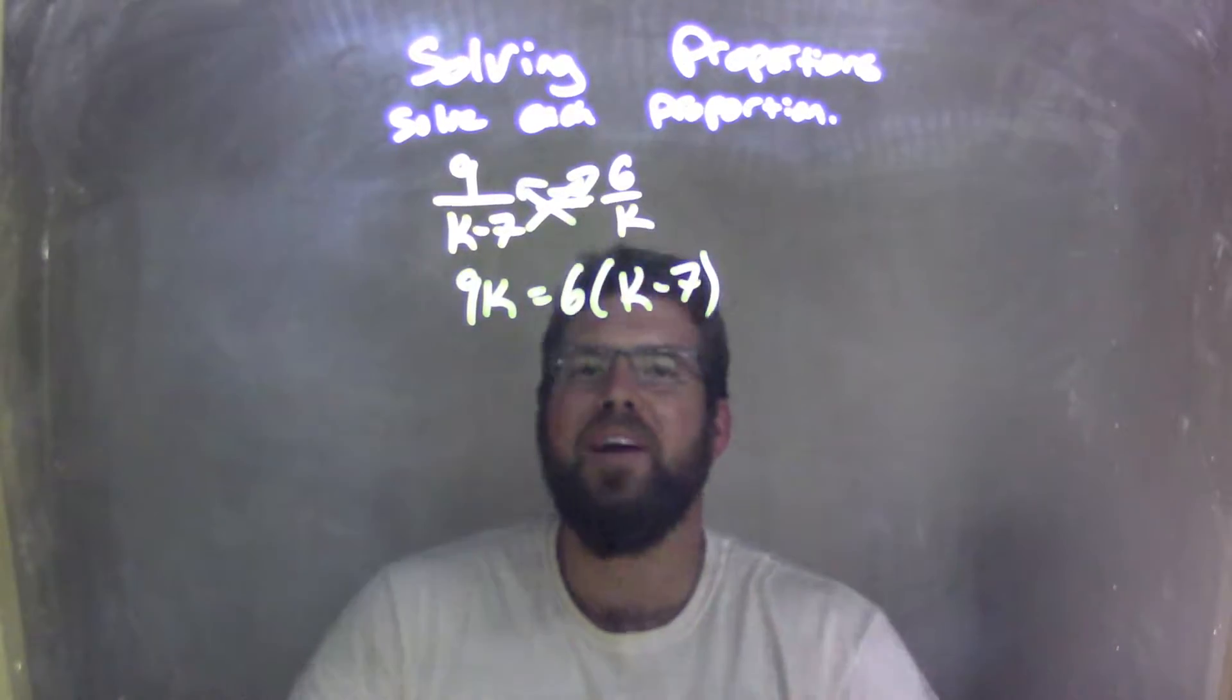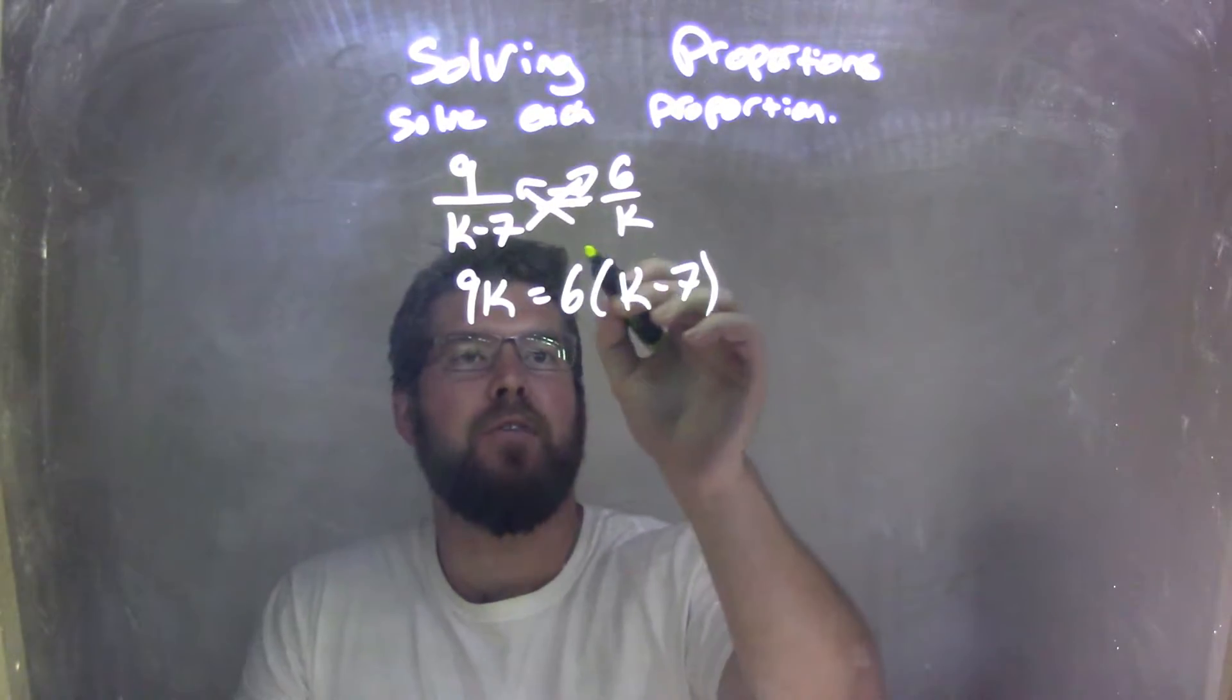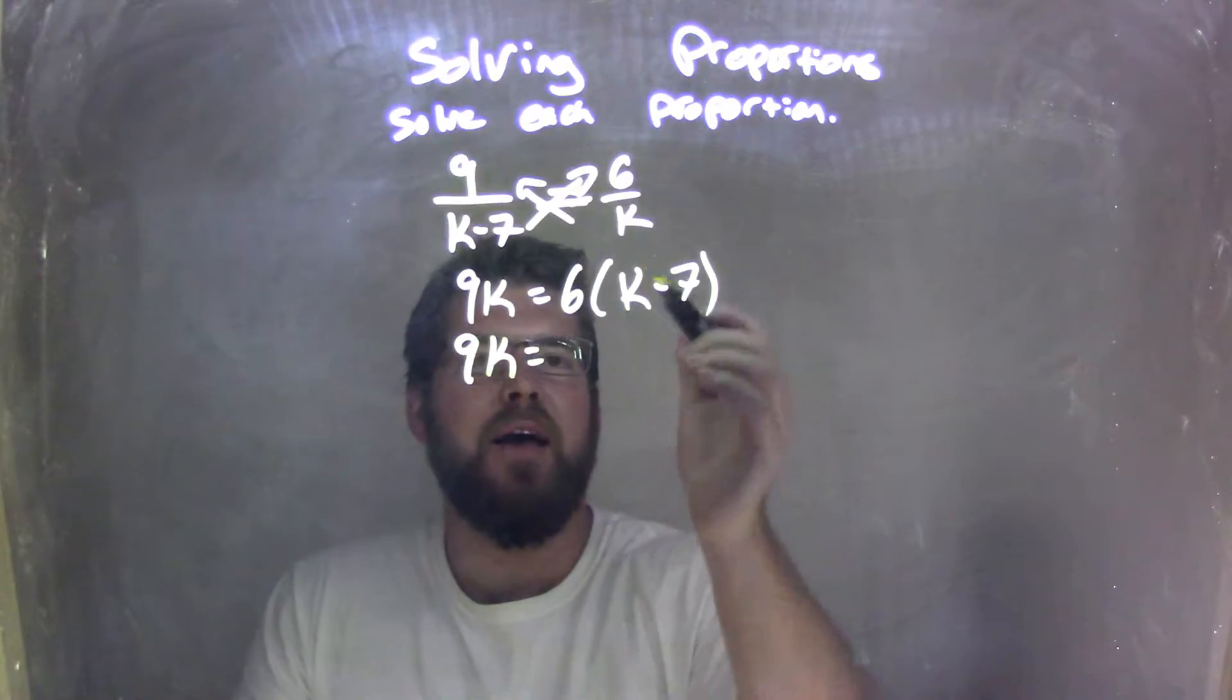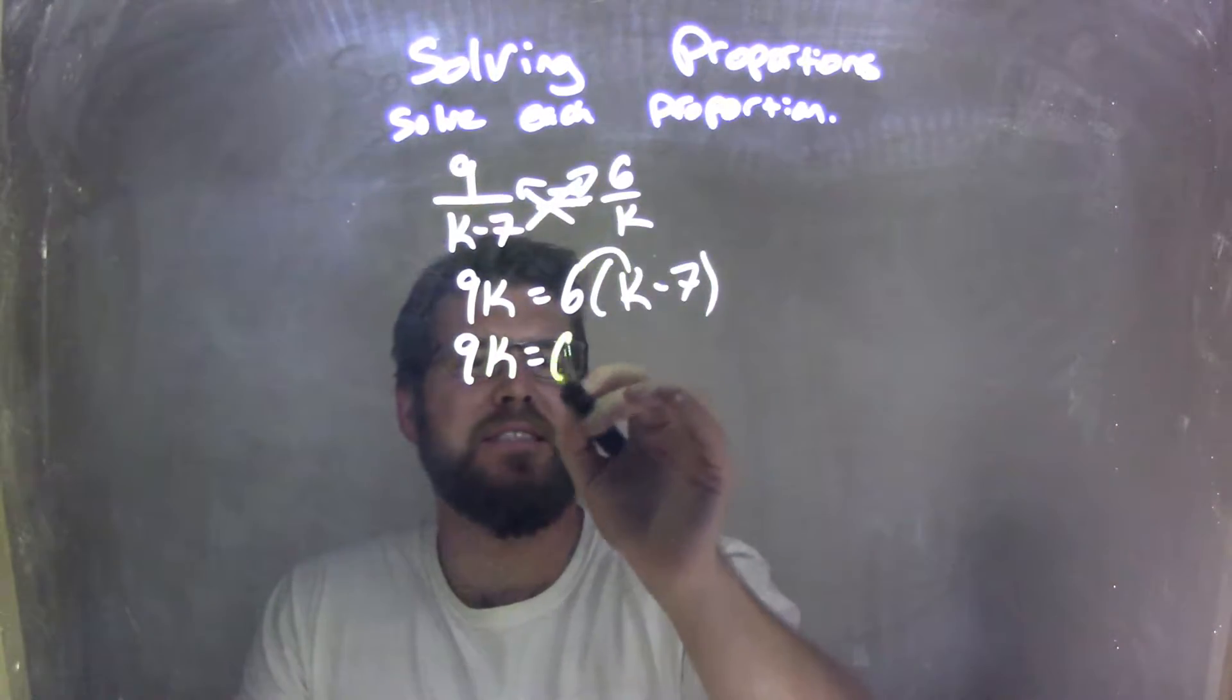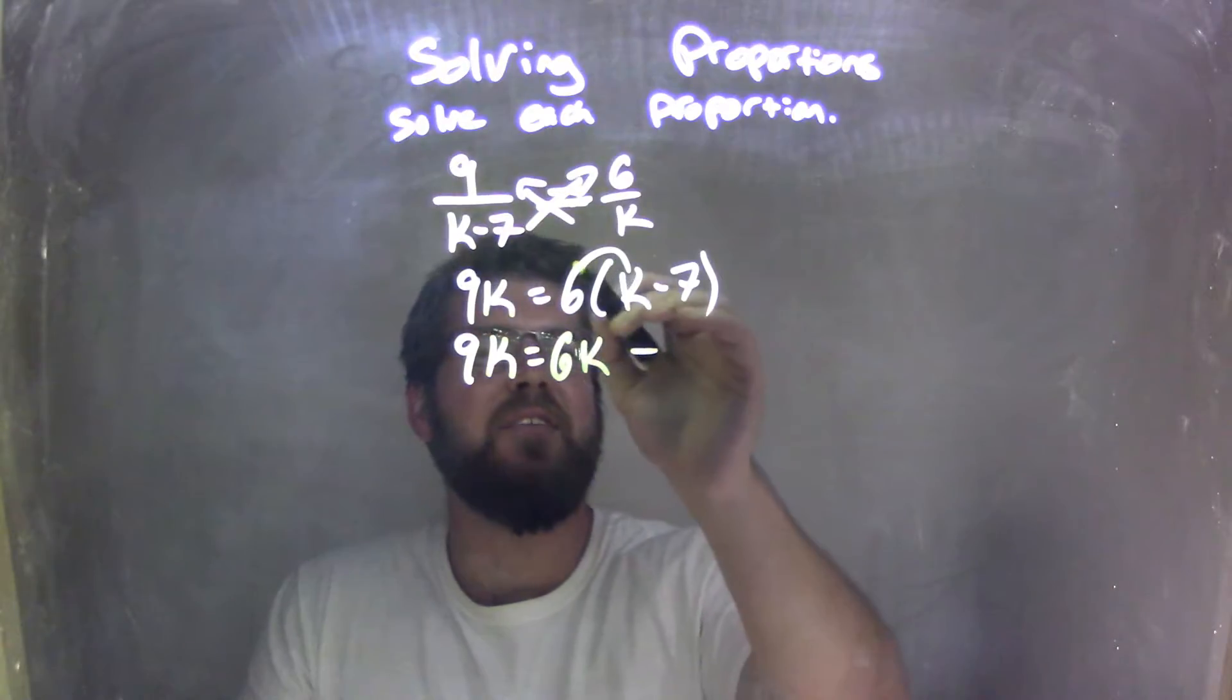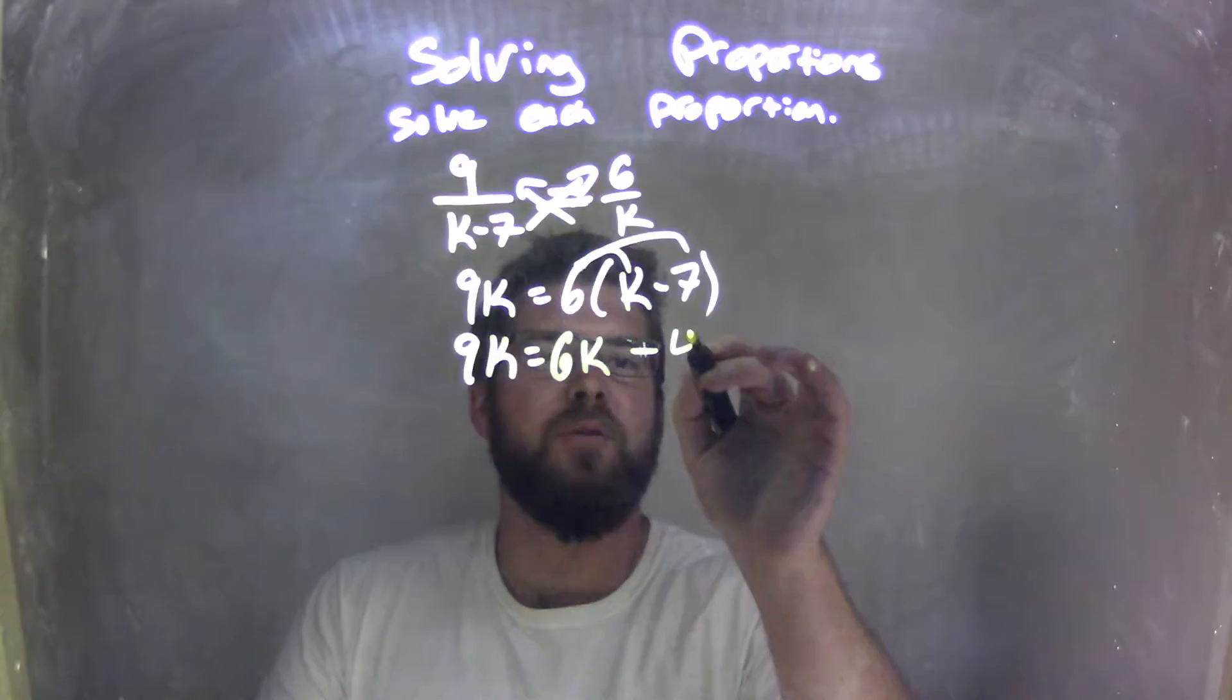From there, I need to distribute the 6 across. So, first, I have a 9k here, and distribute the 6 across, excuse me, so I have 6 times k, which is 6k, and then I have 6 times 7, which comes out to be 42.